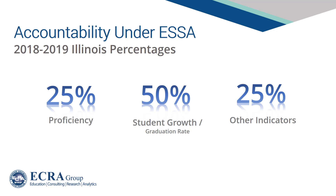Initially, Illinois will measure student growth in grades 4-8. Graduation rate will take the place of student growth at the high school level. However, student growth may expand to the high school level in future years.